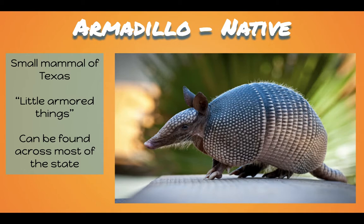The first one I want to talk about more closely is the armadillo. The armadillo is the official state mammal of Texas, and its name — armadillo — translates from Spanish to "little armored things." They can be found across most of the state.